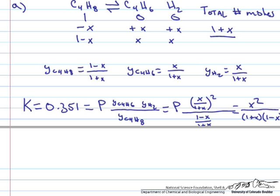So if we just solve this equation for X, we see that X is equal to 0.51. So the equilibrium conversion in this first problem is 51%.